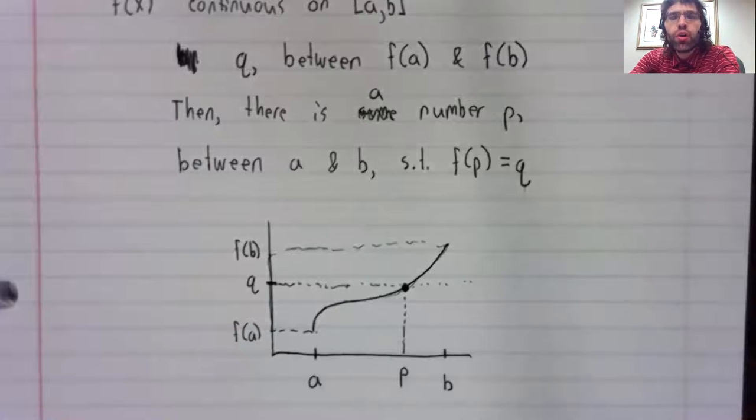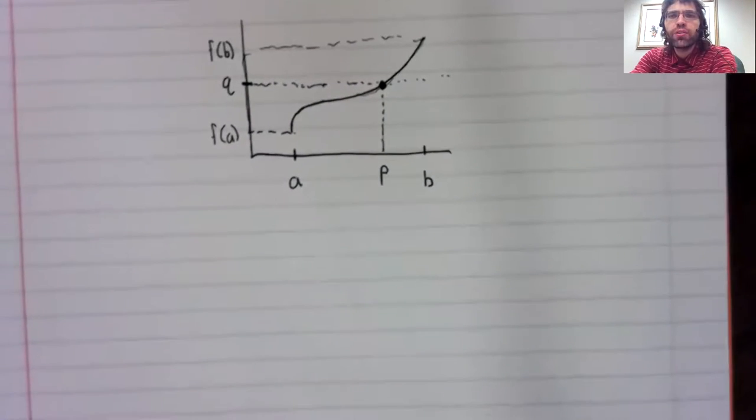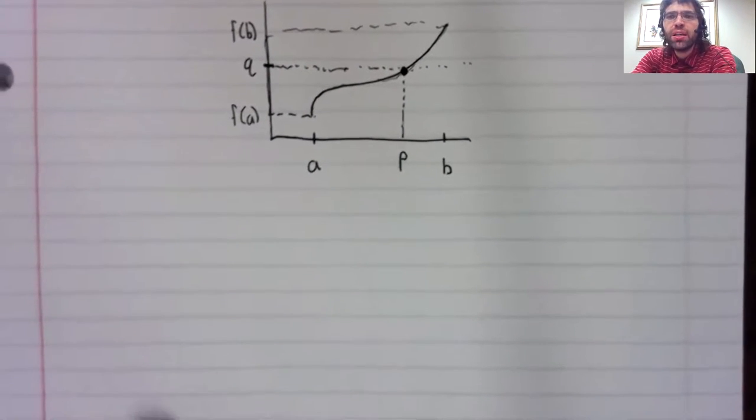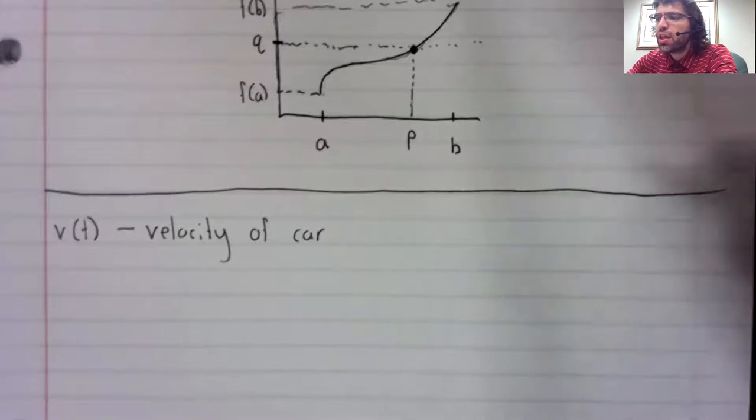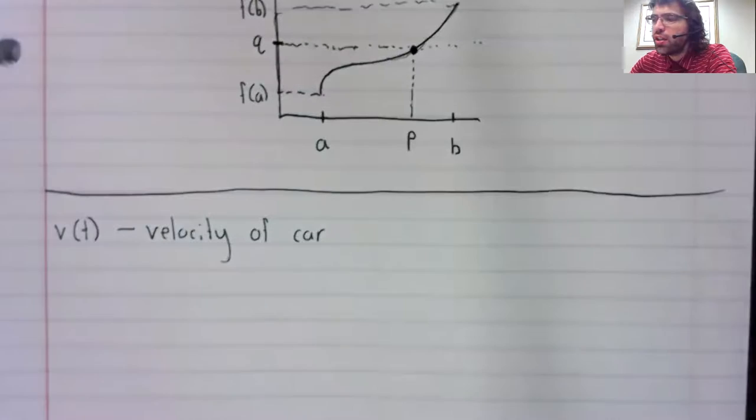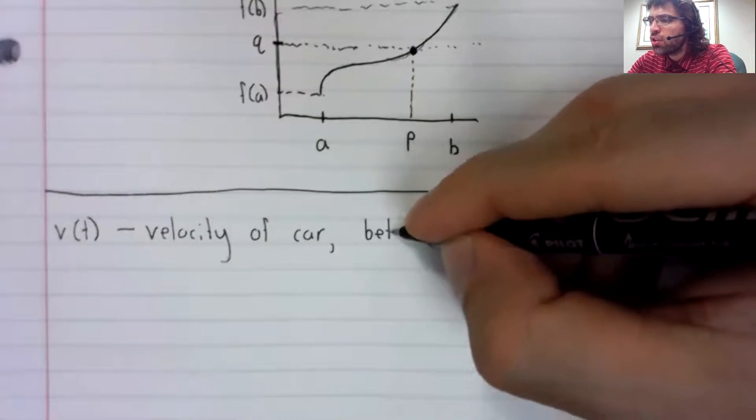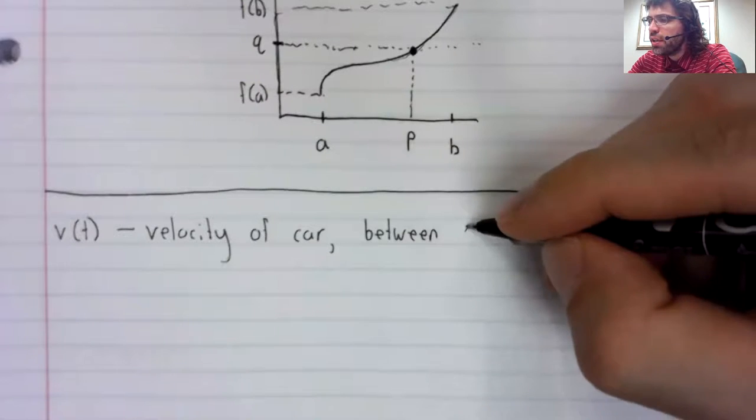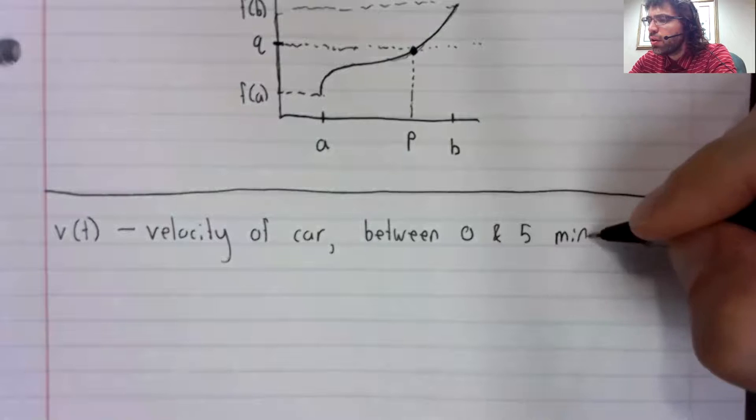It might further help if we look at a concrete example, one with real world meaning. Let's say v of t is the velocity of a car, t can be measured in minutes, and we'll look at the velocity between zero and five minutes.